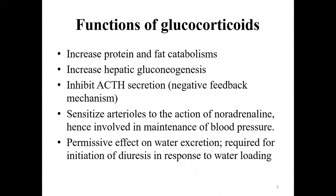Glucocorticoids also inhibit ACTH — that's the negative feedback mechanism. They also function to increase blood pressure by making arterioles sensitive to the action of noradrenaline, hence increasing blood pressure. So if asked why patients with Cushing's syndrome have hypertension, you should be able to explain this mechanism.